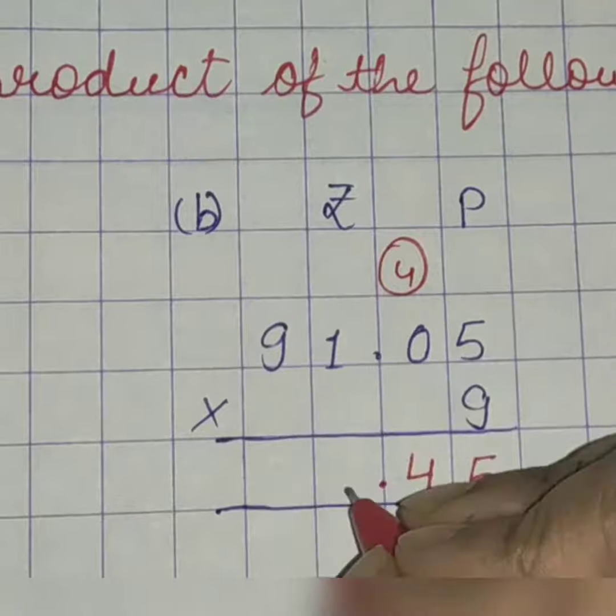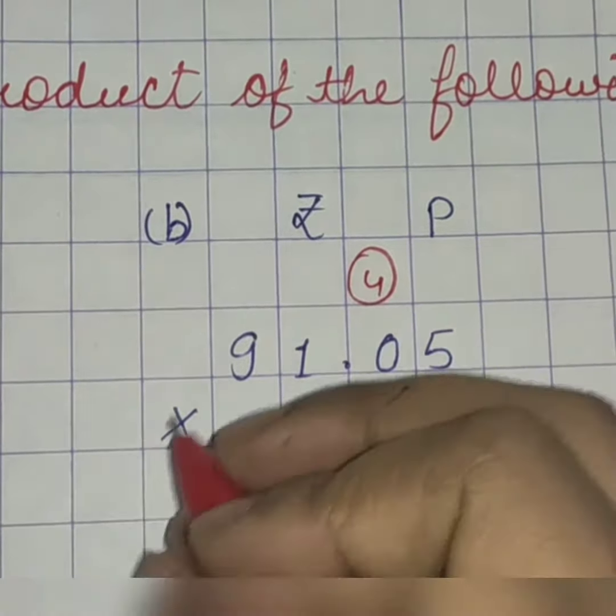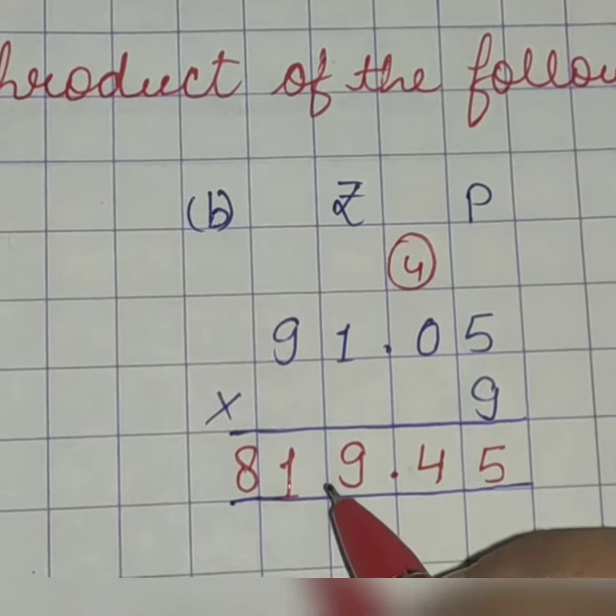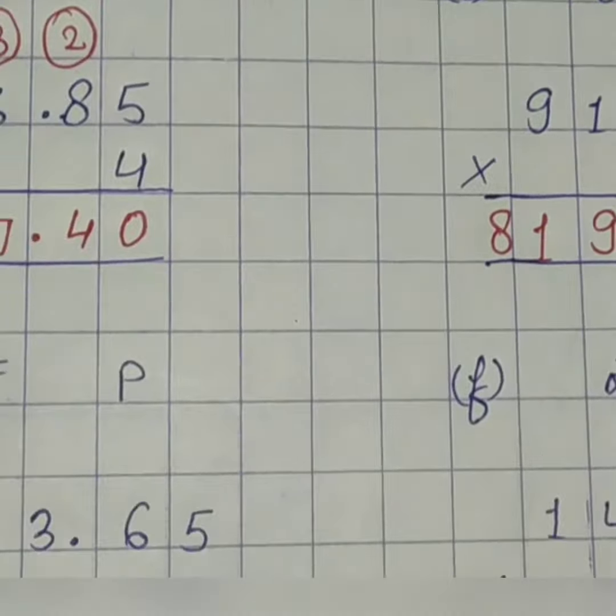Then, dot over here. 9, 1's are 9. 9, 9's are 81. So, this is 819 rupees and 45 paise.